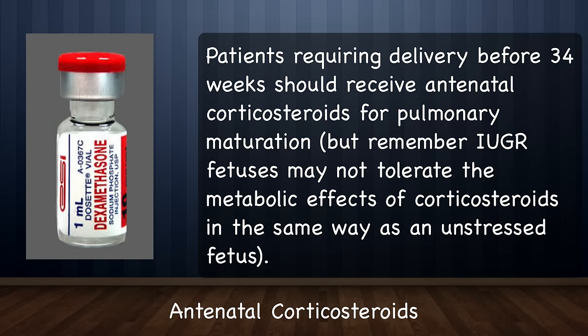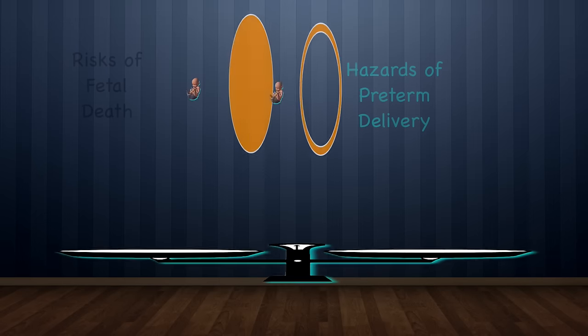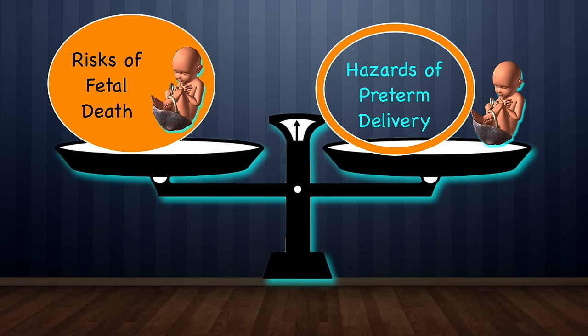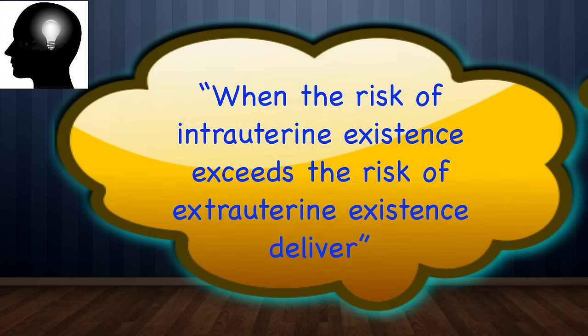Patients requiring delivery before 34 weeks should receive antenatal corticosteroids for pulmonary maturation, but remember IUGR fetuses may not tolerate the metabolic effects of corticosteroids in the same way as an unstressed fetus. When considering early delivery, the risk of fetal death versus the hazards of preterm delivery must be considered, and this may depend on the quality of neonatal care available locally. There is a dictum: when the risk of intrauterine existence exceeds the risk of extrauterine existence, deliver — but this is easier said than done.